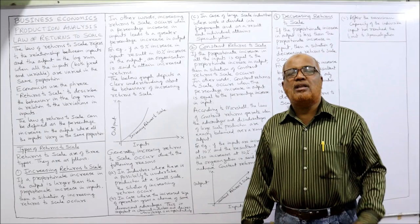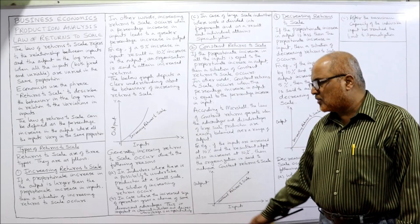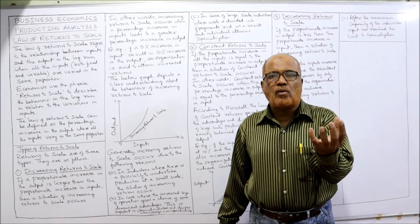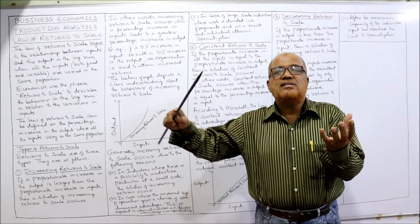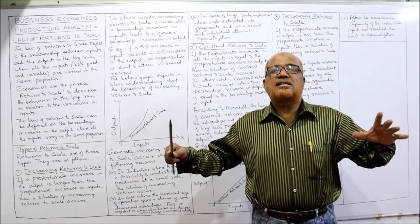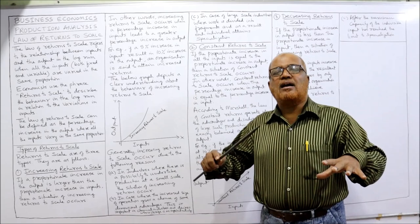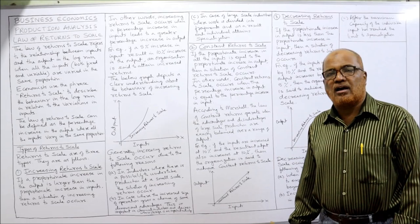Increasing returns to scale occur for the following reasons. First, in industries where production is currently on a small scale, there is scope to increase the scale. When the scale is increased from small to large, output will increase at a higher rate than the input. Because the business is currently dealing in small quantities, converting to large scale will definitely result in increasing returns to scale.